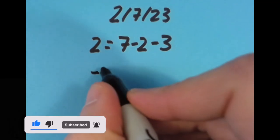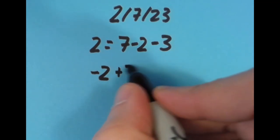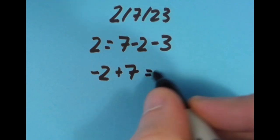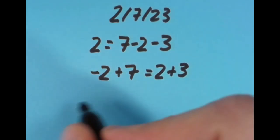If I move the equal sign over a spot to the right, I get that negative 2 plus 7 is 5, and so is 2 plus 3.